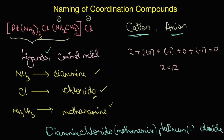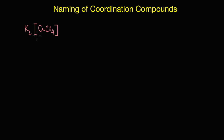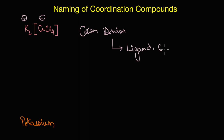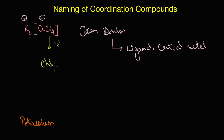Now let's look at a third coordination compound. Interestingly, in this case the counter ion is positively charged (potassium) and the coordination entity is negatively charged. Since we name the cation first, we write potassium first. The coordination entity is the anion, so we name its ligands first and then the central metal atom. The ligand is chlorine, and since it is an anionic ligand the name ends with 'o', giving 'chlorido'. There are four chloride groups, so this becomes 'tetrachlorido'.